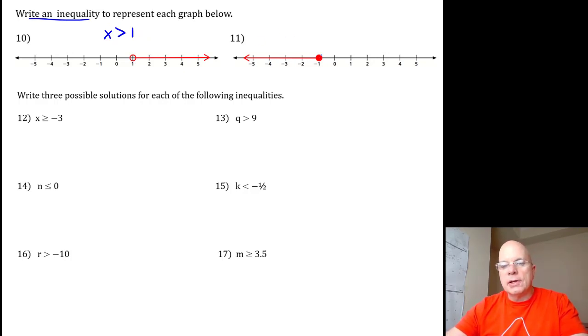For 11, we have a solid dot at negative 1, so I know x could equal negative 1, but it can also equal all of these values to the left of negative 1, so anything less than or equal to negative 1 would be the correct inequality for number 11.